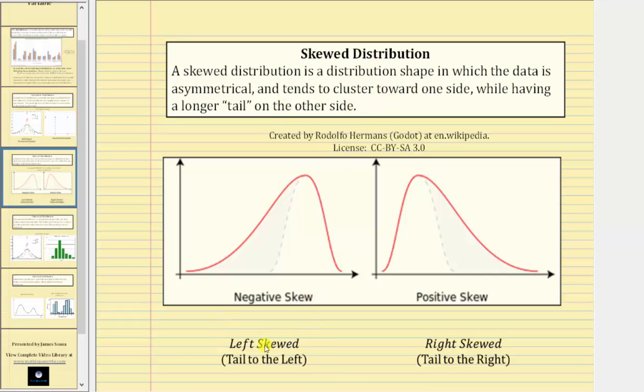A distribution is left-skewed or negatively skewed if the tail is to the left and the data clusters toward the right. A distribution is right-skewed or positively skewed if the tail is to the right and the data clusters toward the left.